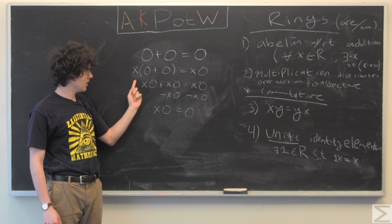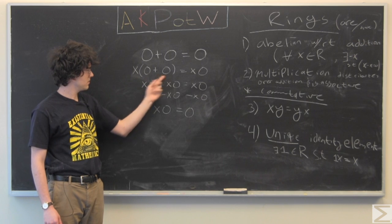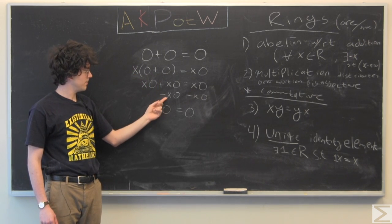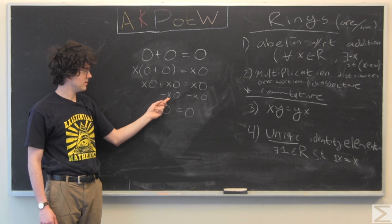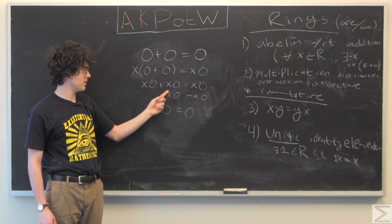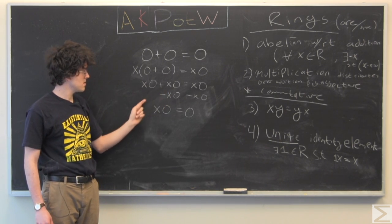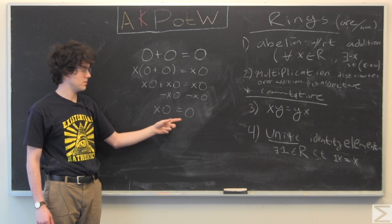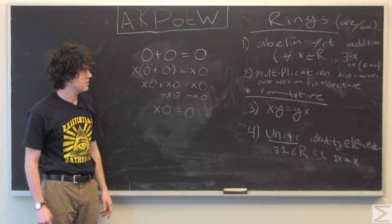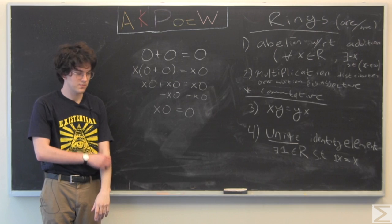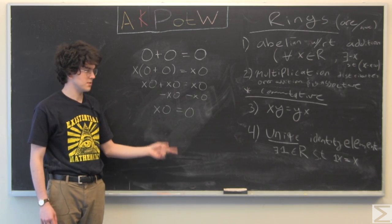And so we distribute this x, add the additive inverse of x0 to x0, so it gives us x times 0 equals 0.